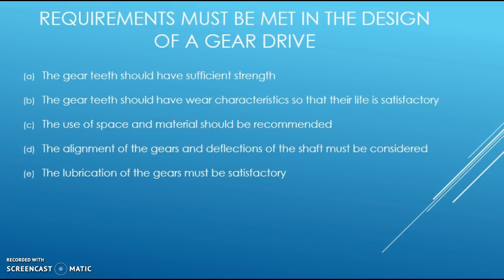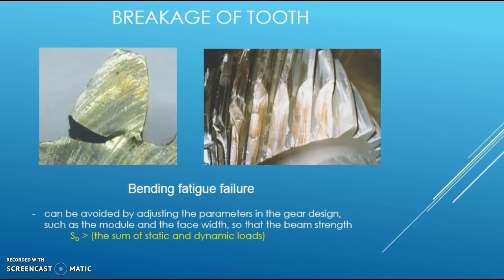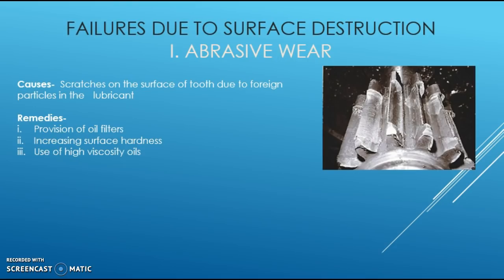The first main type of gear tooth failure is the breakage of tooth, which is due to bending failure. It is also considered as abnormal failure. It happens when the sum of static and dynamic loads becomes greater than the beam strength of the gear tooth. Complete breakage of the tooth can be avoided by adjusting geometric parameters in the gear design, such as the module and face width.